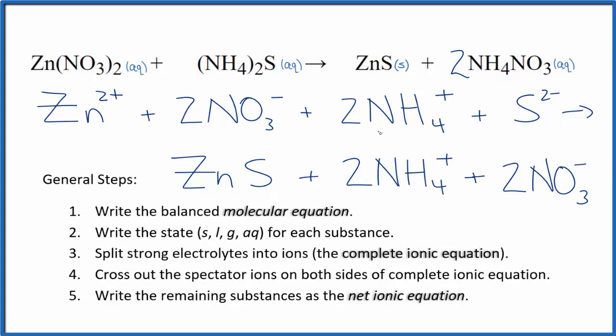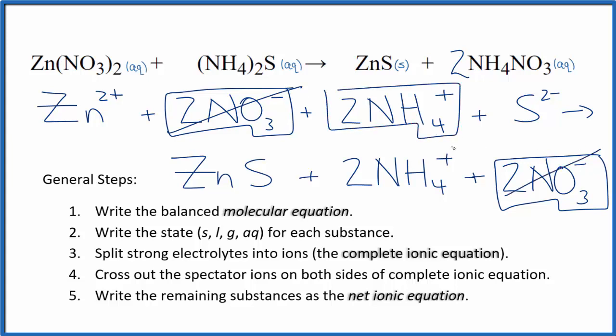Everything else is split into its ions. Now we can cross out the spectator ions. In the reactants, I see I have two nitrate ions. In the products, I also have two nitrate ions. These are spectator ions, and we can just cross them out. We have two ammonium ions in the reactants and again in the products, spectator ions, and we cross them out.